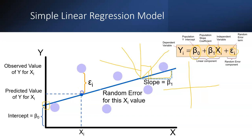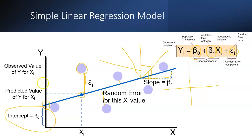The error term E represents the difference between a point and the regression line. For example, if a data point falls exactly on the line, there is no error. If a point is far from the line, there is a larger error — more distance means more error, less distance means less error. B0 is the intercept, meaning the point where the line starts.